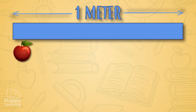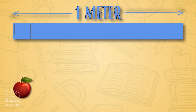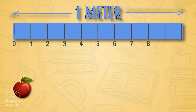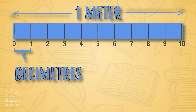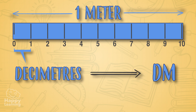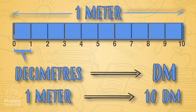But what happens if what we want to measure is smaller than a metre? We need to divide the metre into equal small parts. If we divide a metre into 10 equal parts, we call each of these a decimetre, represented with the letters DM. A metre has 10 decimetres.